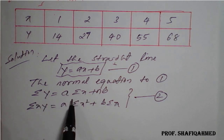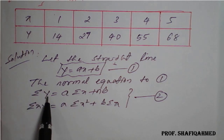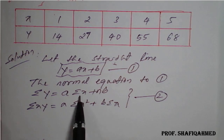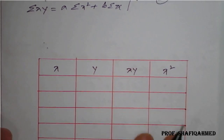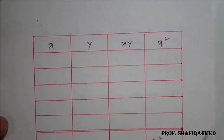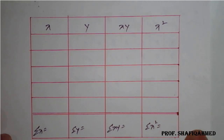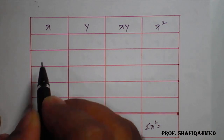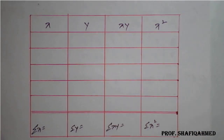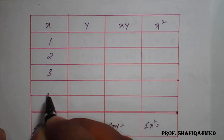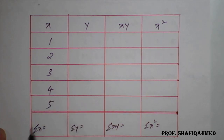Based on this, we have to prepare a table. We need the values of summation Y, summation X, summation XY, summation X square, and summation X. We must first calculate the values of XY from the given table.